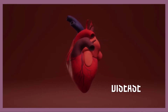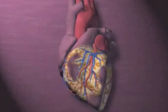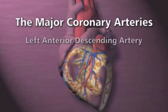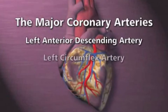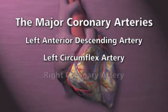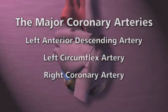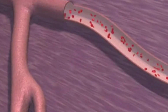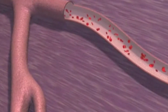The heart is fed by its own circulation known as the major coronary arteries. These arteries include the left anterior descending artery, the left circumflex coronary artery, and the right coronary artery. The bloodstream contains red blood cells which deliver oxygen to the heart muscle known as the myocardium.